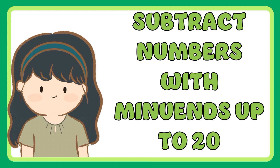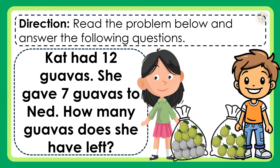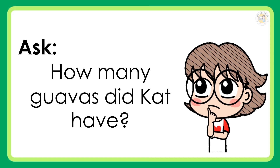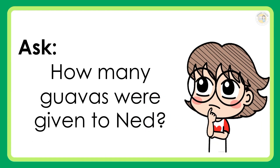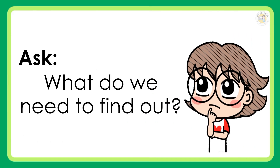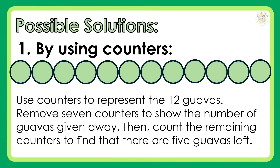Subtract numbers with minuends up to 20. Direction: read the problem below and answer the following questions. Kat had 12 guabas. She gave 7 guabas to Ned. How many guabas does she have left? How many guabas did Kat have? How many guabas were given to Ned? What do we need to find out?